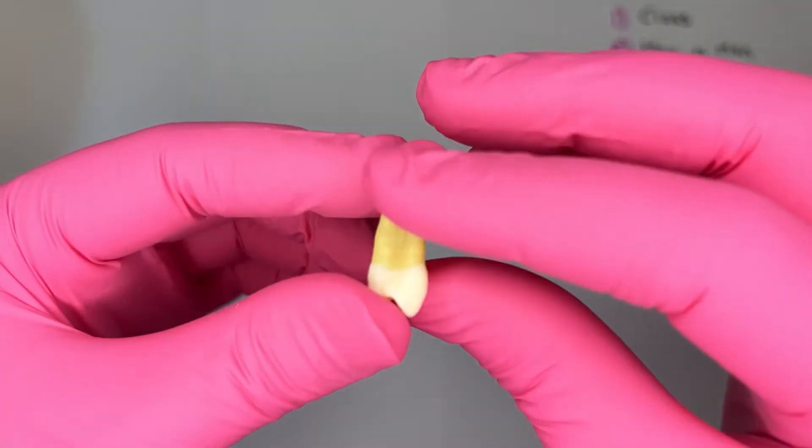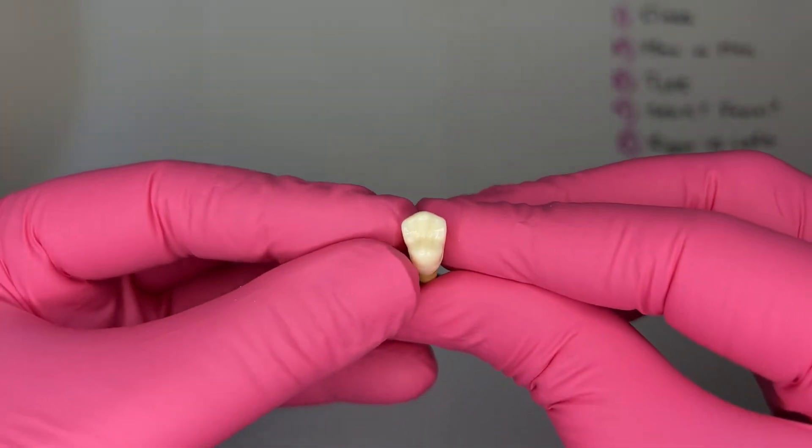Step three, what type of maxillary premolar? The first or second? To determine that, I look at the occlusal anatomy, specifically looking at the grooves.